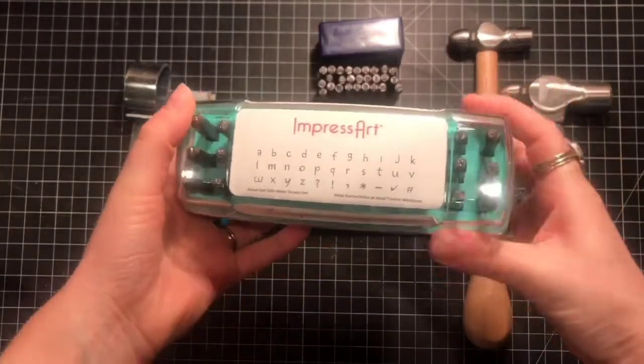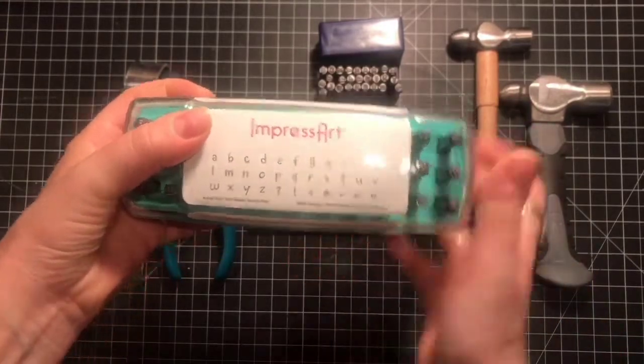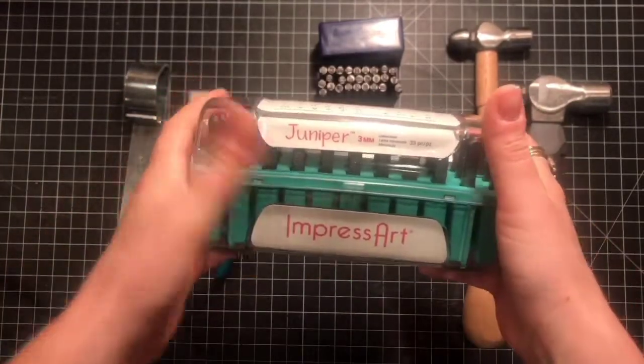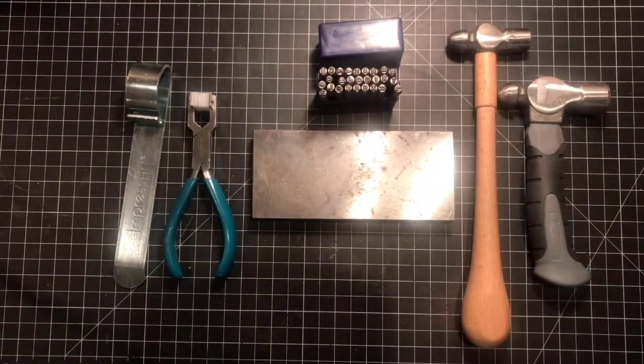So one of these sets right here in ImpressArt comes in a nice container and you also get a couple of symbols down here. This retails for $50 and with the coupon you can get this for $25 which is a really good deal.